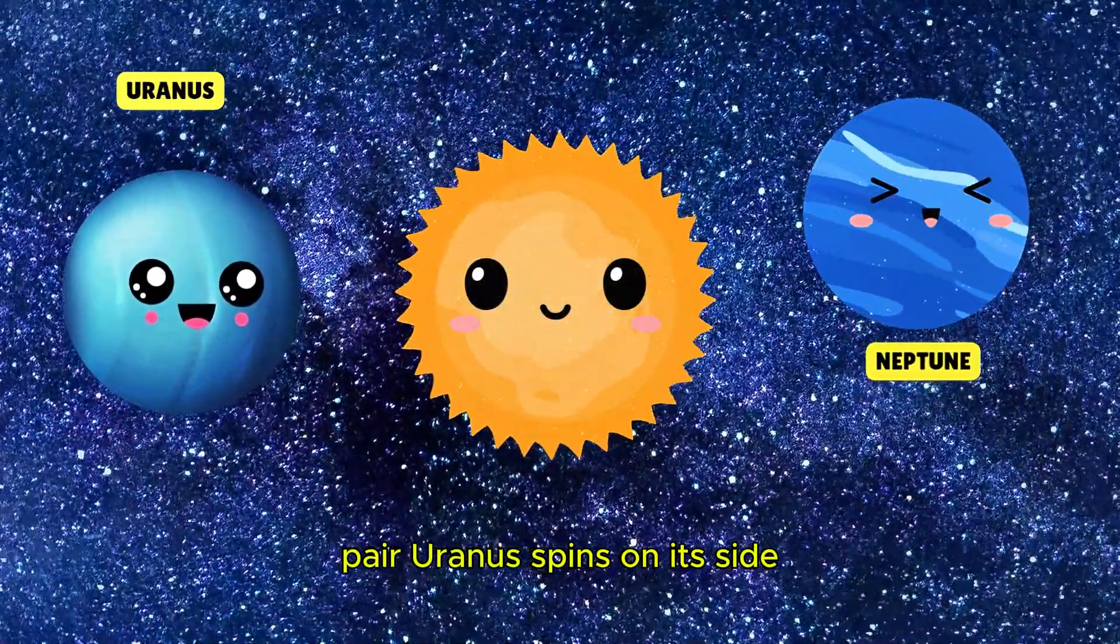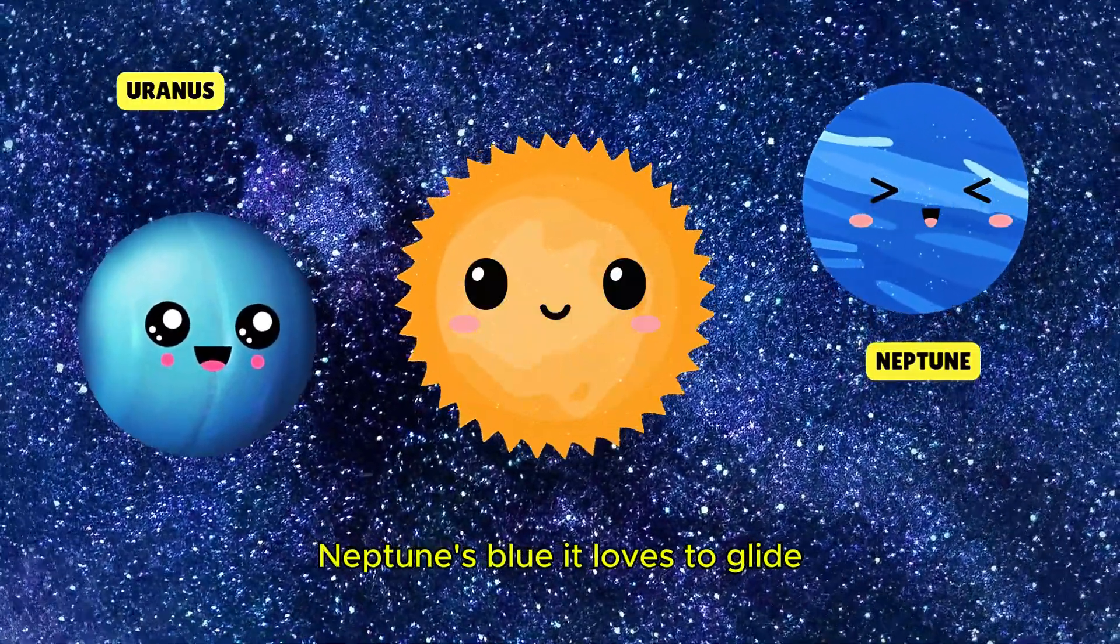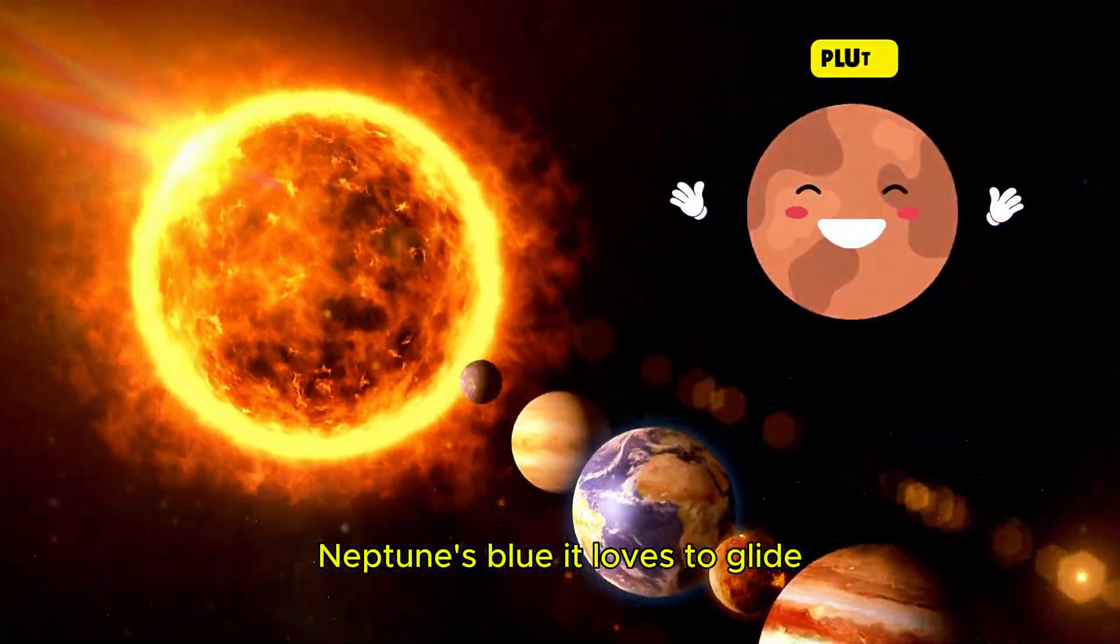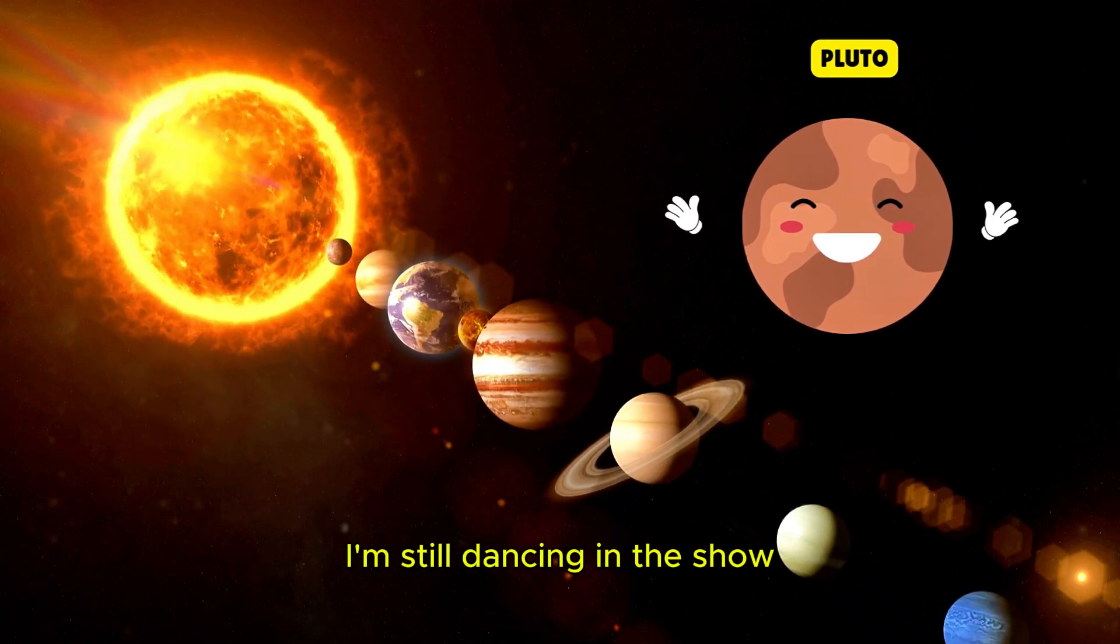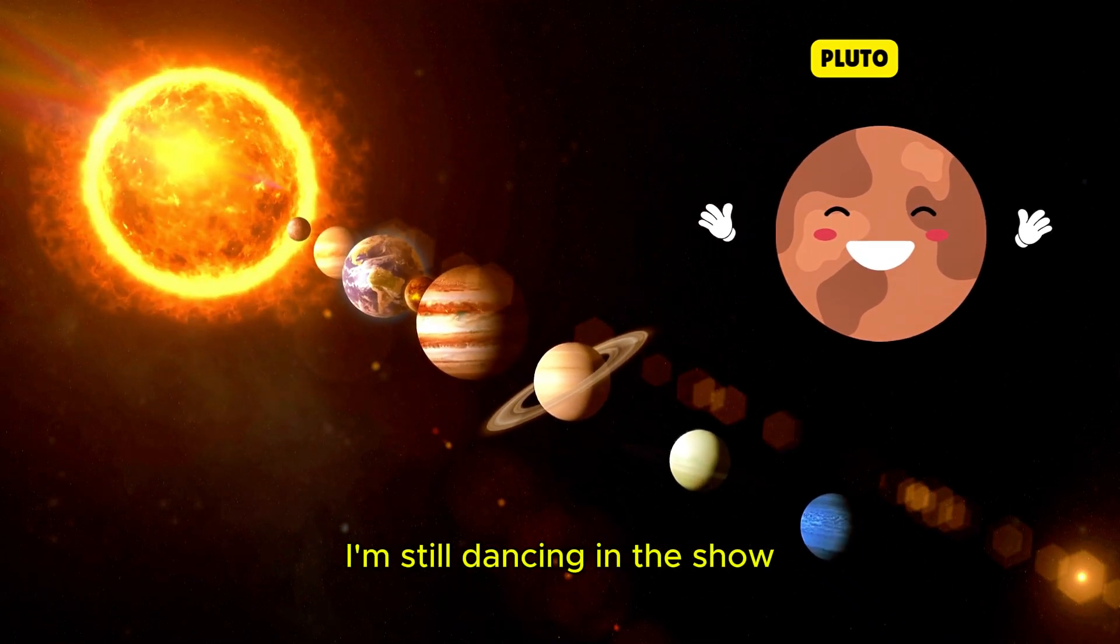Uranus spins on its side, Neptune's blue, it loves to glide. Tiny Pluto says hello, I'm still dancing in the show.